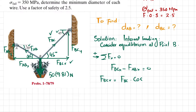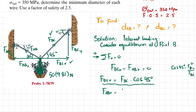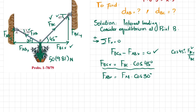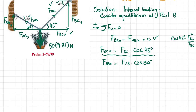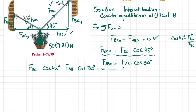Taking cos(45°), that equals F_BC·x over F_BC, so F_BC·x equals F_BC·cos(45°). Similarly, F_AB·x equals F_AB·cos(30°) because of the 30-degree angle. Putting these into the equation: F_BC·cos(45°) minus F_AB·cos(30°) equals zero. This is equation number one.